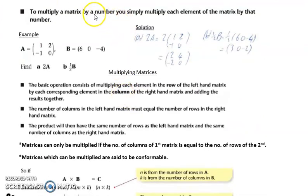To multiply a matrix by a number, or scalar, you simply multiply each element in the matrix by that number. Here a is equal to 1, 2, minus 1, 0, and we want to find 2a. Every element in a gets multiplied by 2, giving you 2, 4, minus 2, and 0. For example b, it's half b. Half times 6 is 3, half times 0 is 0, and half times minus 4 is minus 2.